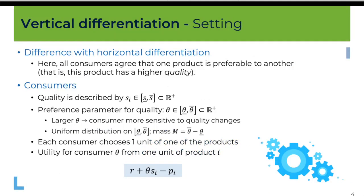Let us start by recalling the difference between vertical and horizontal differentiation. In a previous presentation we talked about horizontal differentiation — it's a matter of different tastes among consumers. Some consumers prefer one product, other consumers prefer another product, and so if these two products are priced at the same price there will be demand for both products.